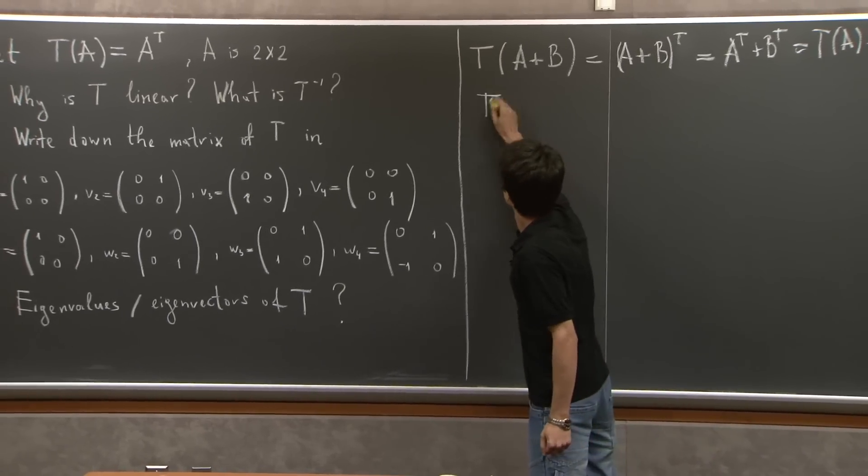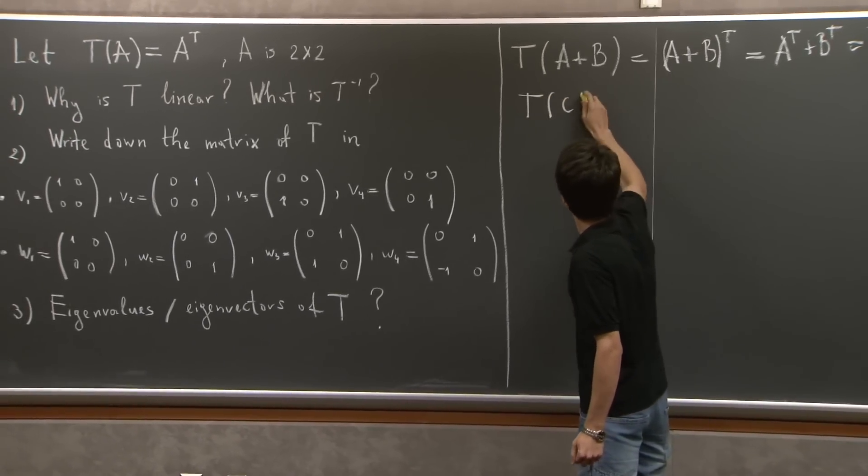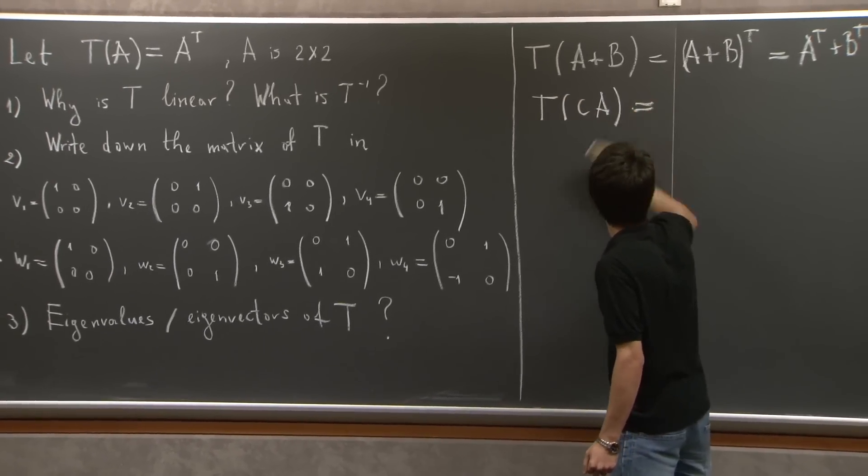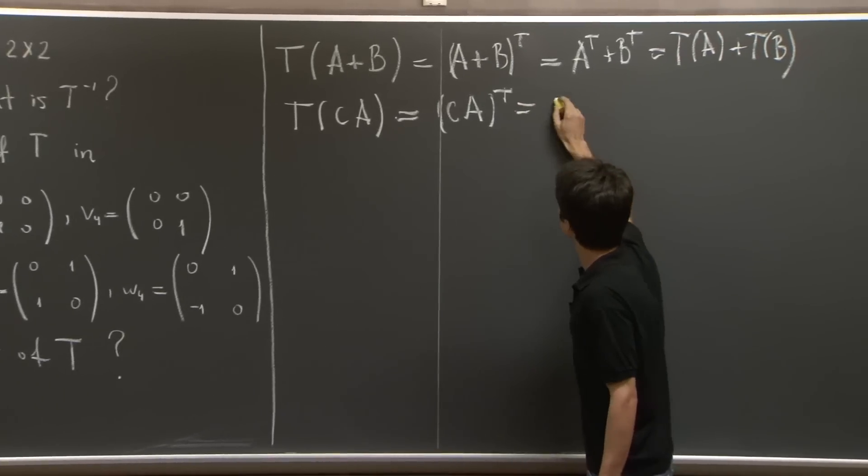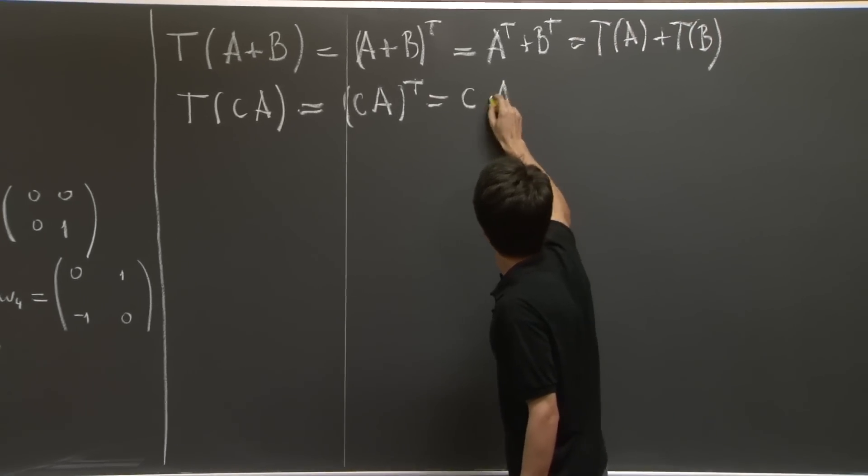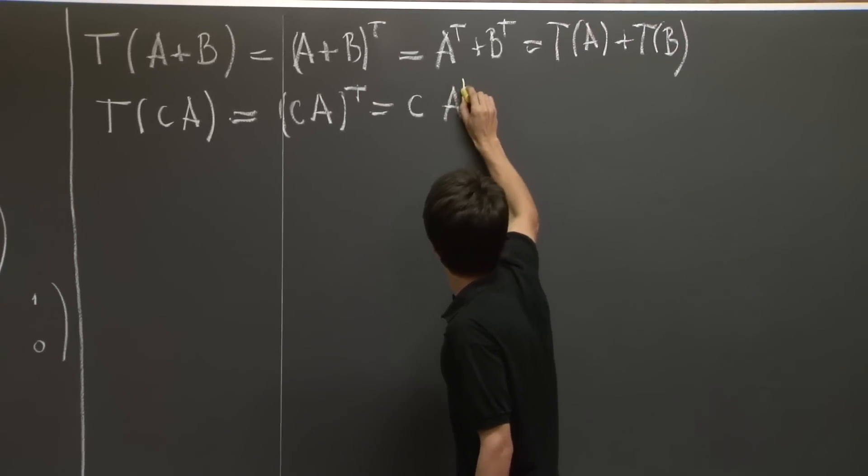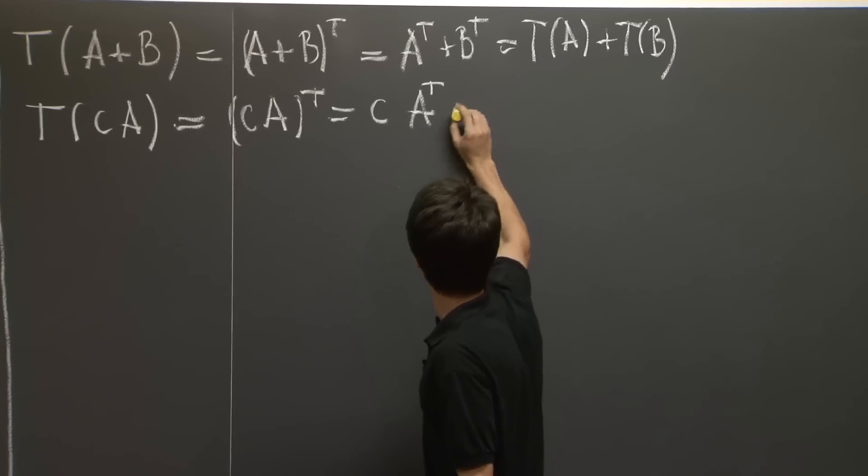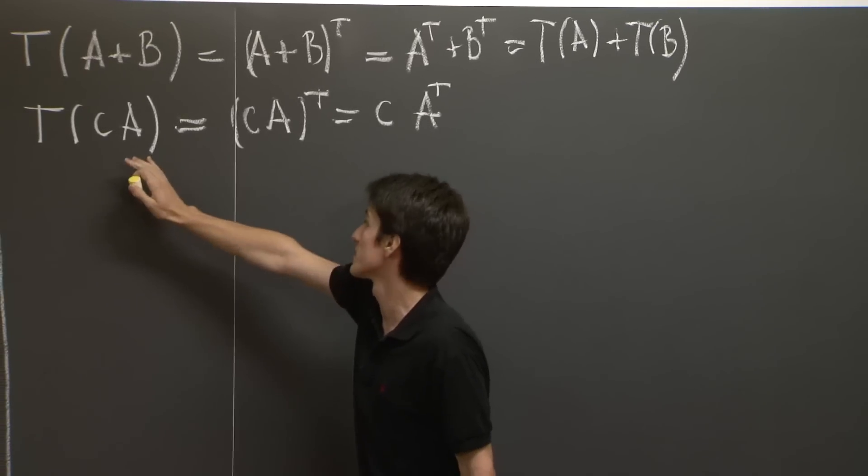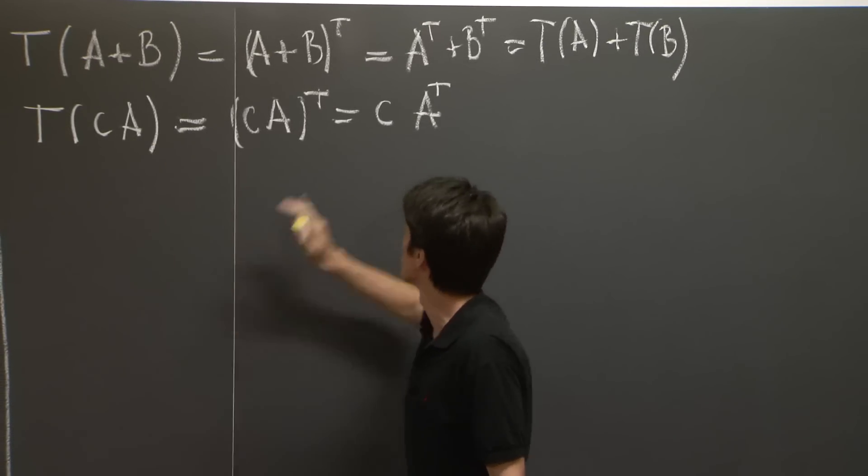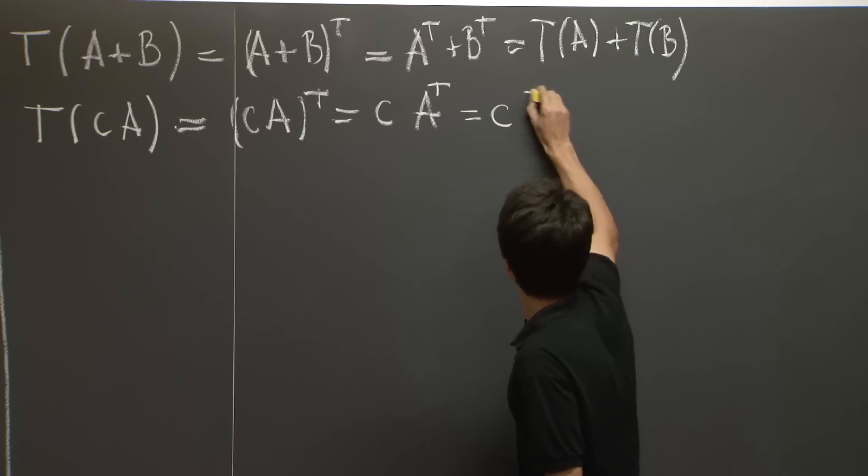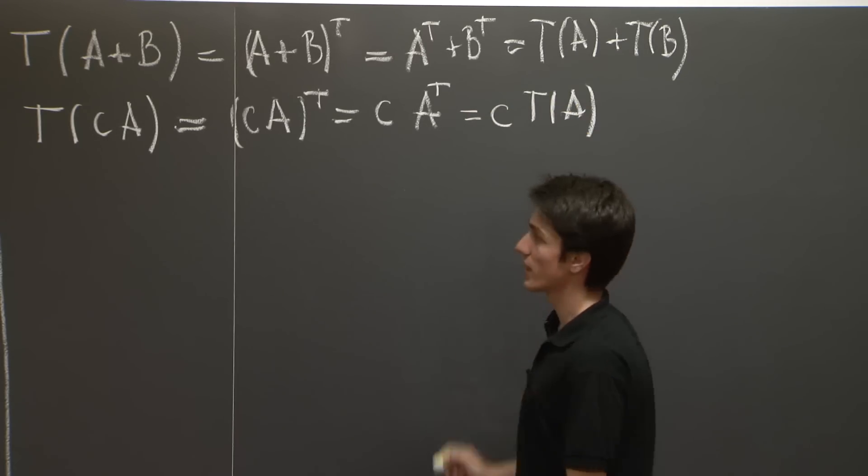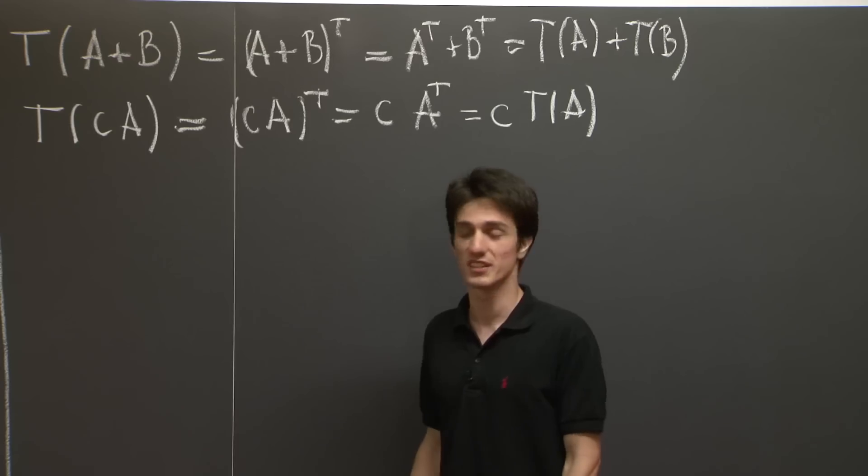Similarly, it takes a multiple of a transformation into the multiple of the transformations. So it takes the matrix C times A to C times A transpose, which is C times T(A). So it is a linear operator.